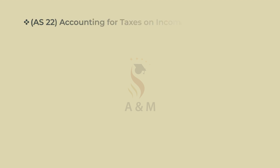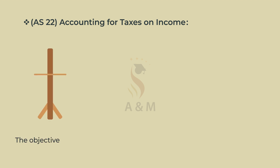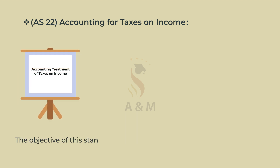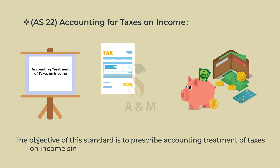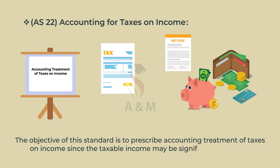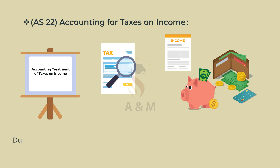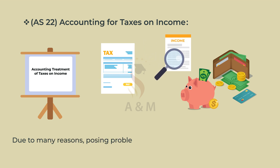Accounting Standard 22: Accounting for Taxes on Income. The objective of this standard is to prescribe accounting treatment of taxes on income, since the taxable income may be significantly different from the accounting income due to many reasons, posing problems in matching of taxes against revenue for a period.